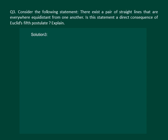Let us read the question. Consider the following statement: There exists a pair of straight lines that are everywhere equidistant from one another. Is this statement a direct consequence of Euclid's fifth postulate? Explain.